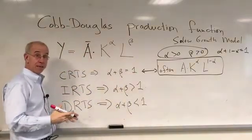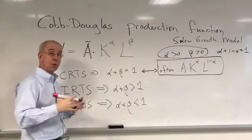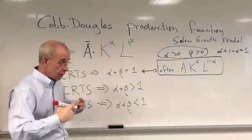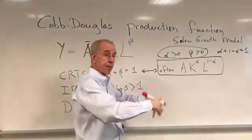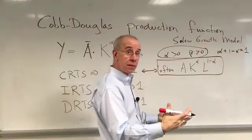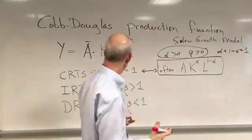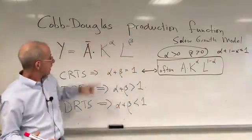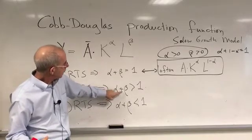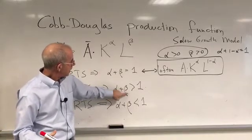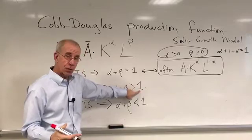If you have a Cobb-Douglas production function with increasing returns to scale, so that if you increase all inputs proportionately, you more than increase output by that same proportion, then mathematically, if you add the two exponents, it's going to be something greater than one.